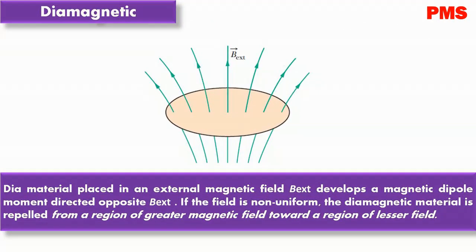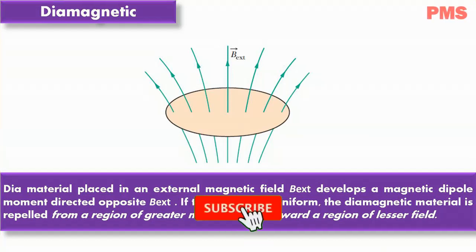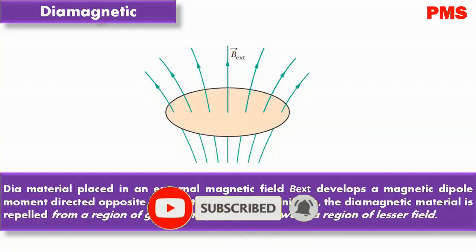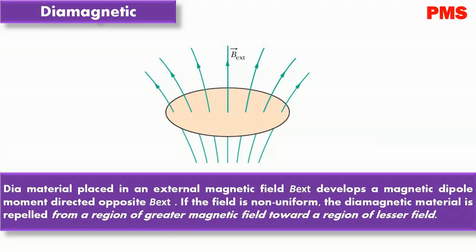Now let's turn on the non-uniform external magnetic field, in which the external magnetic field is directed upward but diverging — the magnetic field lines are diverging. We can do this by increasing the current through an electromagnet or by moving the north pole of a permanent magnet closer to and below the orbits. As the magnitude of the external magnetic field increases from zero to its final maximum steady-state value, a clockwise electric field is induced around each electron orbital loop according to Faraday's law and Lenz's law.